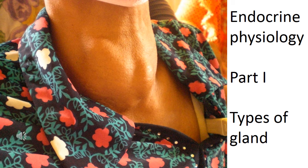For example, goblet cells are a unicellular gland — just one cell. Of course, there are many millions of them, but each gland is only one individual cell. They are called goblet cells because they look like an old-fashioned drinking goblet turned upside down. There are lots of goblet cells lining the respiratory mucosa, where they produce mucus deposited directly onto the respiratory surfaces, moistening the epithelium and protecting it against foreign materials and infection.